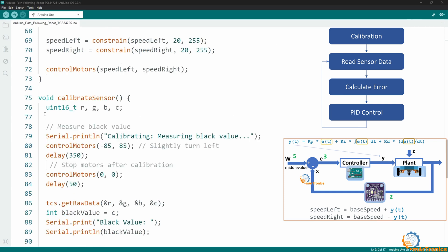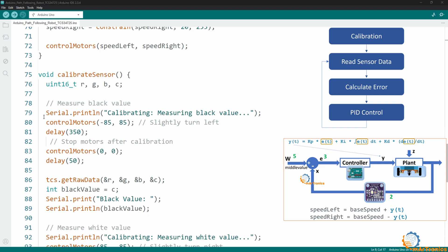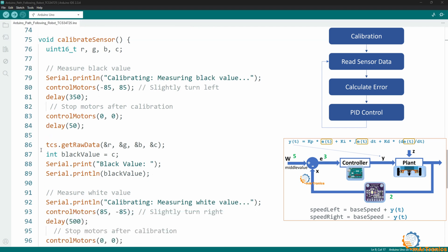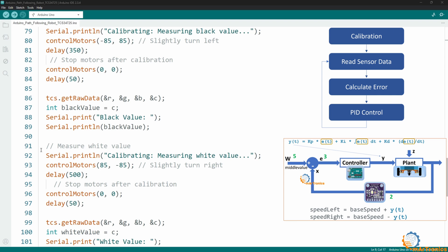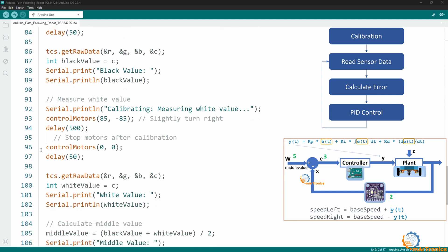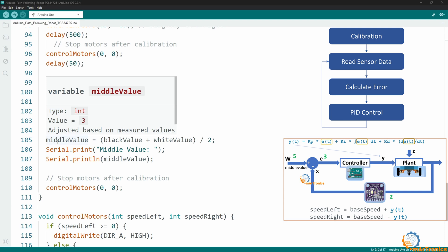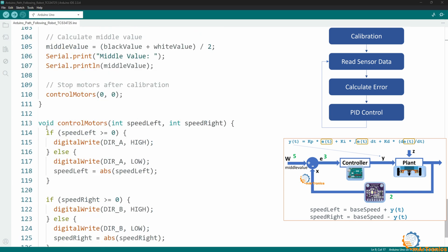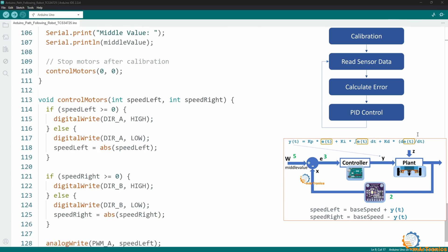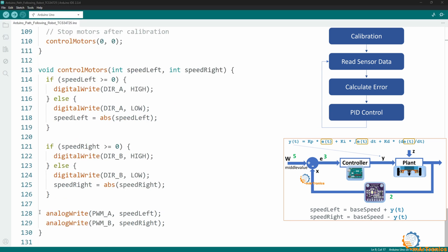Then I have a calibration function. So I rotate the robot to the dark place and then I measure it. Then I rotate the robot to the light place and take its measurement. Then I add the two values and divide them by two to get the average value. This function is specific to moving the motors. It controls the direction and speed of the motors and also determines the motor speed using the PWM signal.